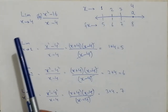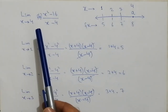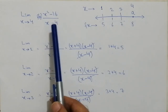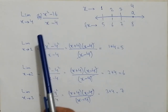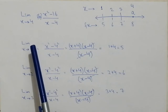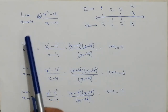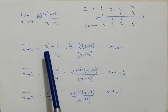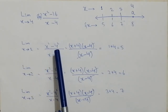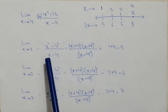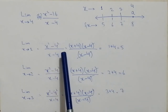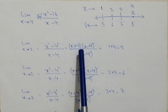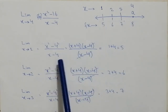Let's suppose limit x approaches to 4 and f of x is equal to x squared minus 16 divided by x minus 4. Now suppose the limit is approaching towards 1 — limit x approaches to 1. Then x squared minus 16, or 4 squared, divided by x minus 4. We know that x squared minus 4 squared is equal to x plus 4 into x minus 4, divided by x minus 4.